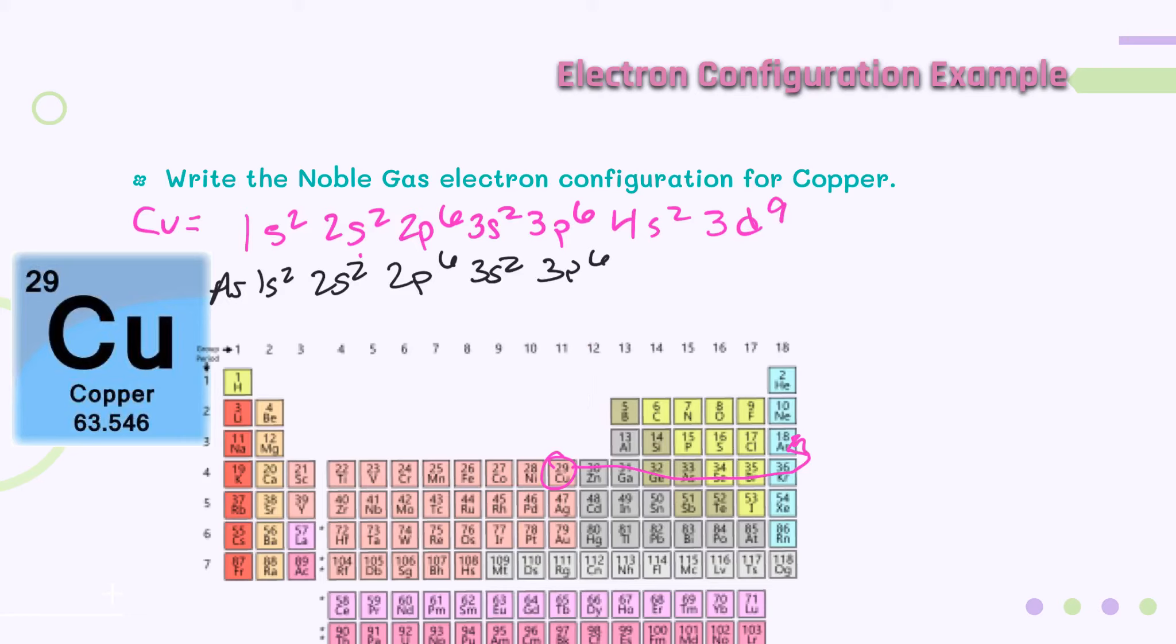So now what we can do is, if you notice, these are all the same between the two. So the only thing we have left for copper's noble gas configuration that's different from argon's is 4s2, 3d9. So we can write copper's noble gas configuration as argon 4s2, 3d9.